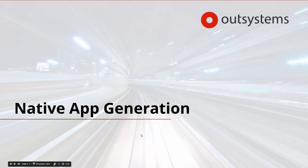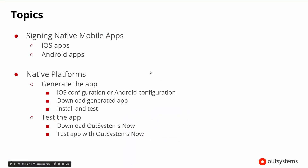Welcome to the native app generation session. In this session, we'd like to discuss how we can generate native mobile apps. To do that, we need to be able to sign the native mobile app, and those processes are a little bit different depending on whether it's an iOS app or an Android app. We'll look at both of those, and then we'll look at the new native platforms tab inside of the development environment that allows us to generate the app.